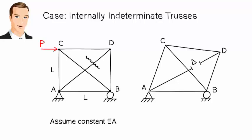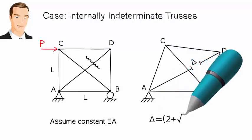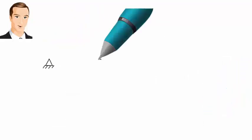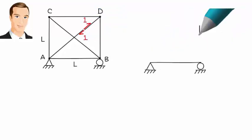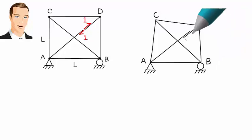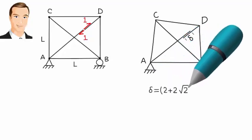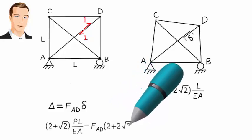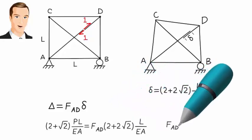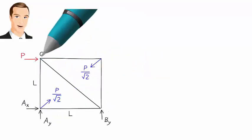Since the revised truss is statically determinate, we can easily calculate delta using the virtual work method. For our truss, when calculated using the virtual work method, delta equals a specific value. Now we apply a unit axial force to the cut member to reduce the opening caused by cutting the member, and we measure the resulting axial displacement, referred to as lowercase delta. Lowercase delta can also be calculated using the virtual work method. We can now write the compatibility equation, and the redundant force equals P over square root of 2. Once the redundant force is computed, we can determine the remaining member forces using the method of joints.